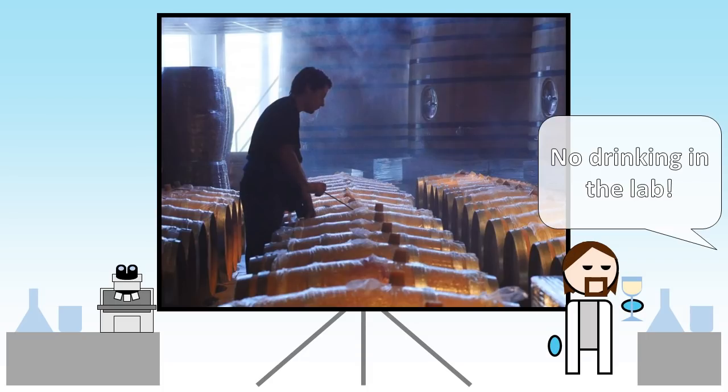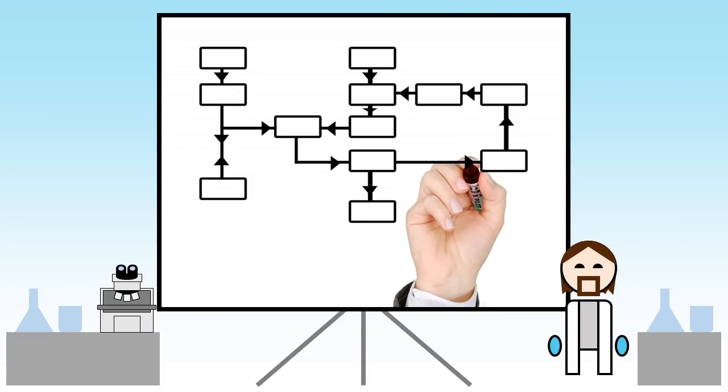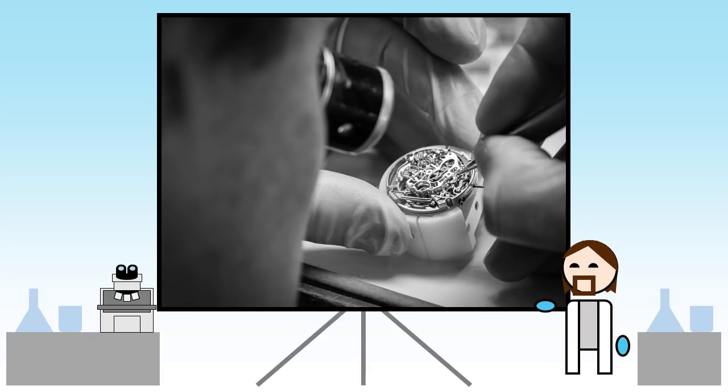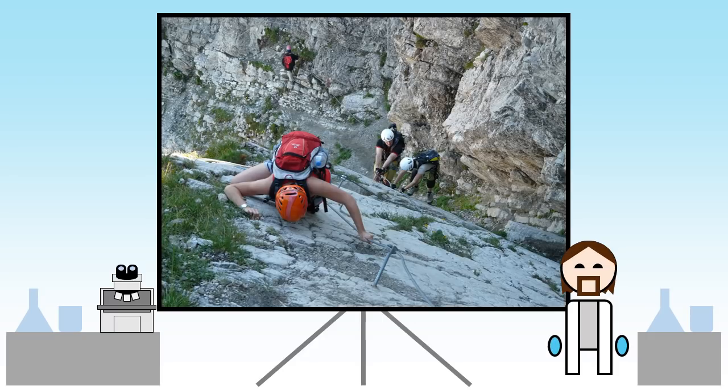When added to the polyol process, PVP attaches to the silver crystals leaving the ends exposed. This means that as more silver atoms are produced, they can only attach to the exposed faces and the crystals start to grow first into rods then into wires.